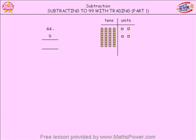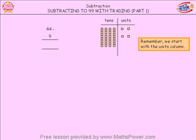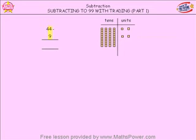Now we need to start with the units column. 4 take away 9. Here are our 4 units. Can we take away 9? We can't, can we? So what do we do, can you remember?